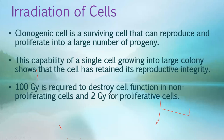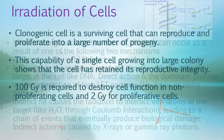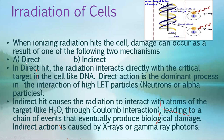Approximately 100 Gy is required to destroy cell function in non-proliferating cells, but only about 2 Gy for proliferating cells. When ionizing radiation hits a cell, damage occurs via direct or indirect action. In indirect action, radiation interacts with water inside the cell, creating ions and radicals that then hit and break the DNA strand. In direct action, an emitted electron directly interacts with and damages the DNA.